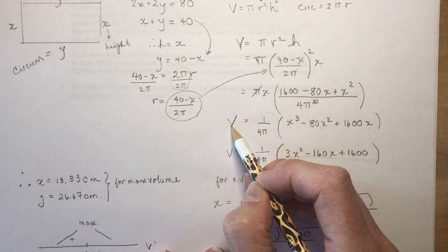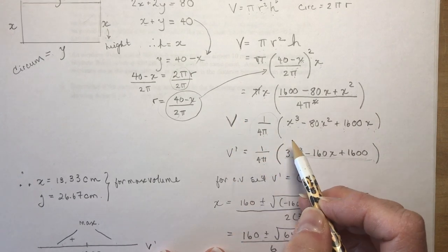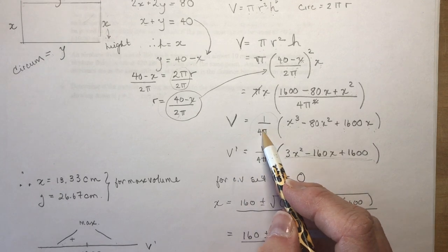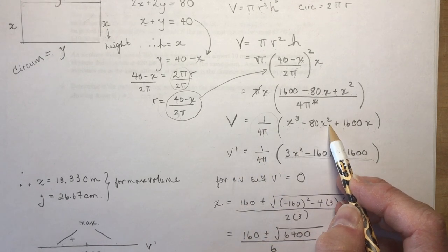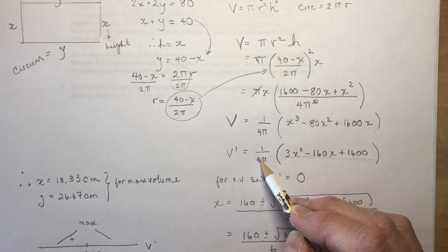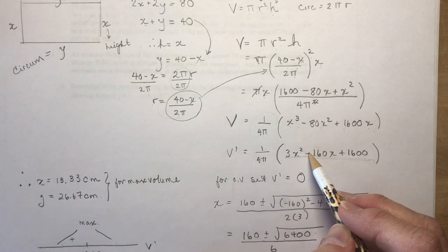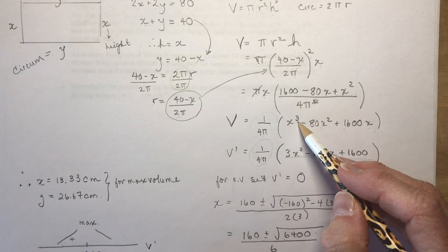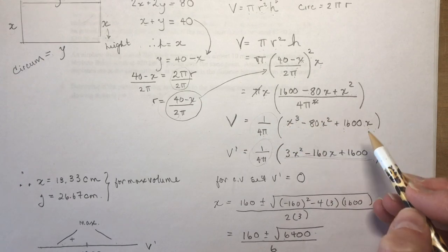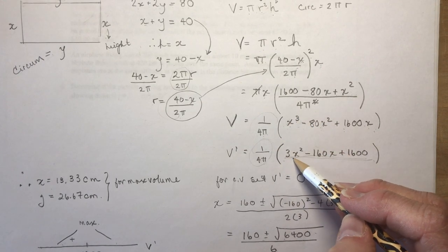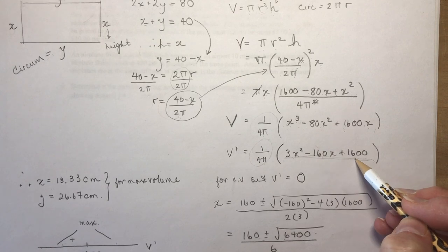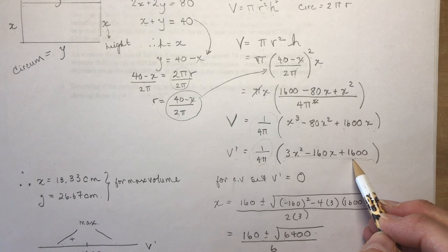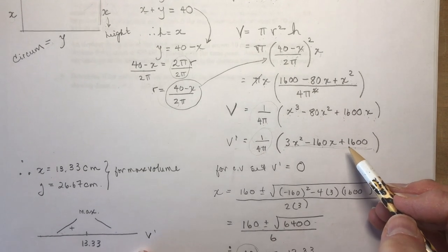I need to take the derivative to try to find the maximum volume. A constant times a function, the derivative of that is a constant times the derivative of the function. So I could just leave this out front, and then I took the derivative of this from the inside. So that gave me 3X² - 160X + 1600.